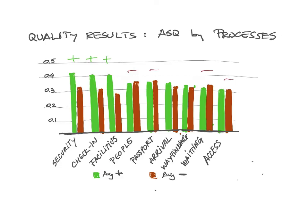To finish, one of the aims was to measure quality. Based on those positive and negative comments, we could extract quality results. We have a green column for the average positive comments and a red column for the average negative comments. Where the green part is much bigger than the red, those areas have higher quality. In some areas — people, passports, waiting, and airport access — the red is even higher.